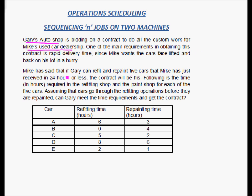Mike has said that if Gary can refit and repaint five cars that Mike has just received in 24 hours or less, the contract will be his. Since delivery time is the criteria, Mike says that in the last few hours he has received five cars which require refitting and repainting. If Gary can complete the job on these five cars in less than 24 hours, the contract will be his.